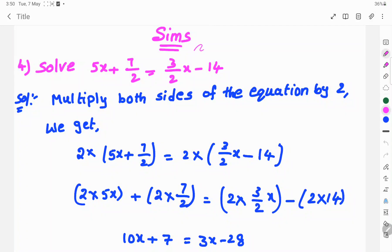Hi, welcome to Sims. Today's sum: solve 5x plus 7 by 2 equals 3 by 2x minus 14.